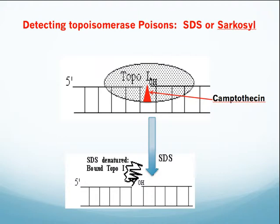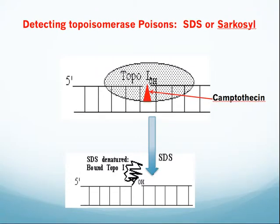In order to effectively trap the topoenzyme complex, it's necessary to use detergents, such as SDS or sarkosyl. This greatly enhances our ability to trap the intermediate, as shown here, because the protein becomes irreversibly denatured. Then the task is to simply measure the amount of topoisomerase that's bound to genomic DNA, using a method that we'll describe next.